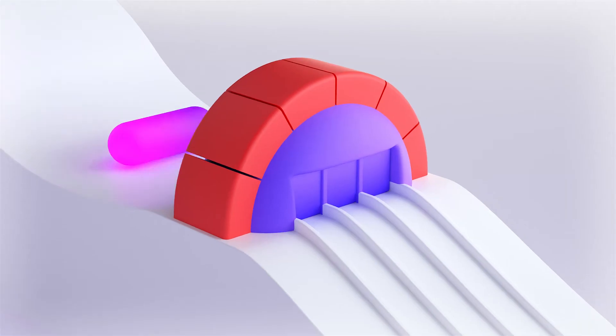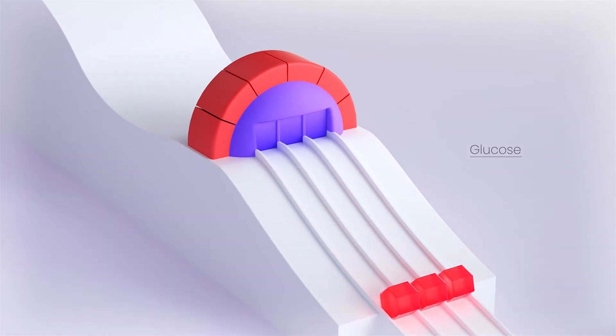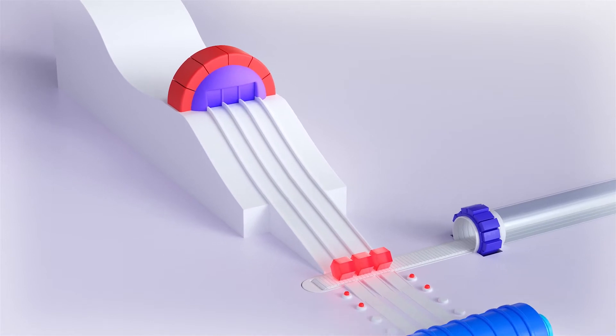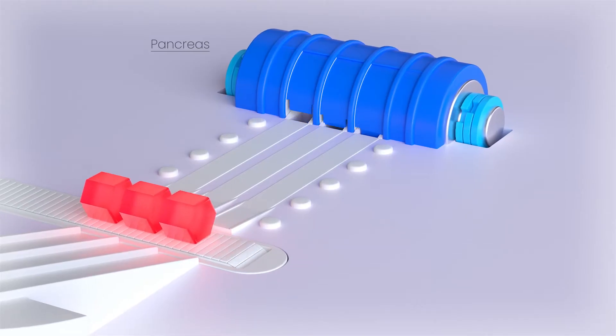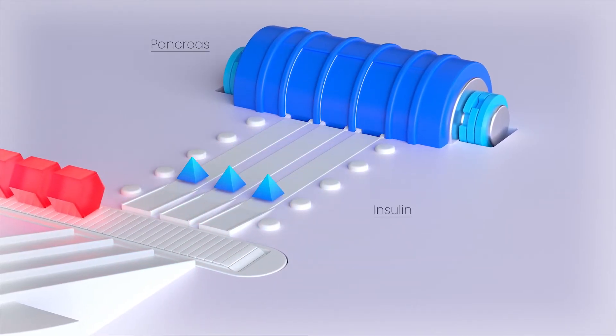These are then converted into energy called glucose. Your pancreas senses the rising glucose levels in your blood and reacts by producing a hormone called insulin.